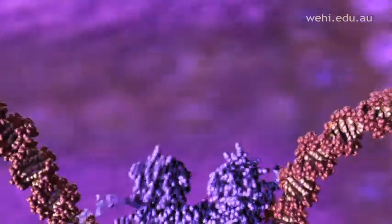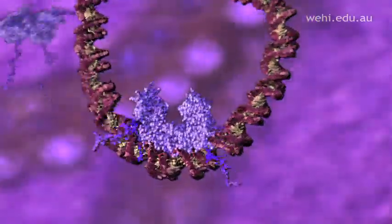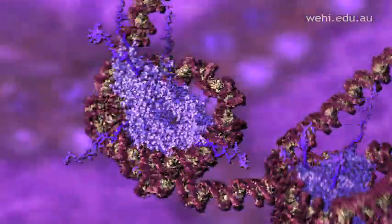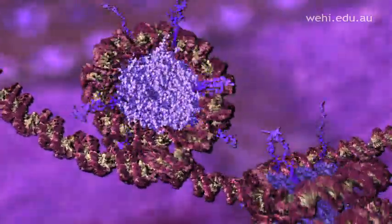The process starts when DNA is wrapped around special protein molecules called histones. The combined loop of DNA and protein is called a nucleosome.